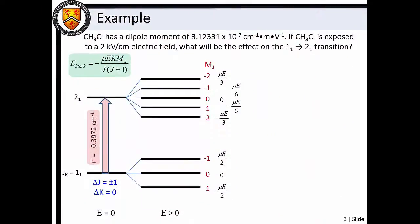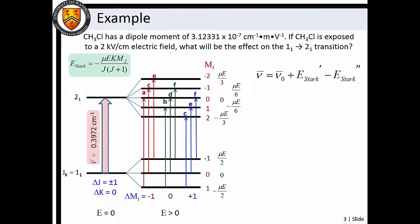For example, consider the new transition of chloromethane which occurs at a wave number of 0.3972 reciprocal centimeters. Knowing that delta m sub j equals plus or minus one or zero, we expect nine Stark components.